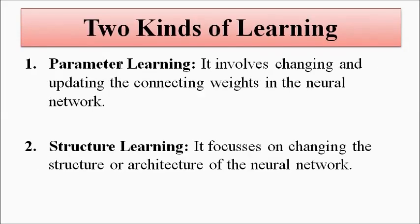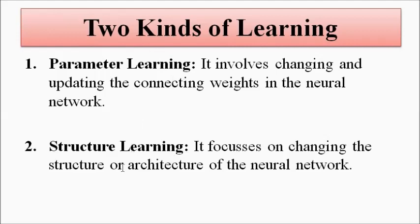There are two ways in which the neural network implements the learning process. The first involves updating or changing the synaptic weights — the connecting weights. We know that two neurons are connected by a link, and each link has a weight associated with it. This is called parameter learning. The other type focuses on changing the whole network architecture — the way in which the various neurons are connected. Parameter learning is simpler; structure learning is more complex as it involves changing the entire network architecture.